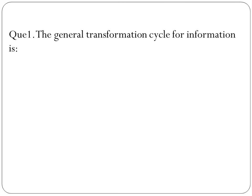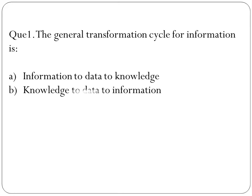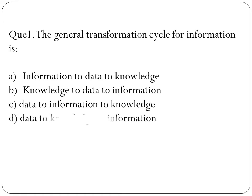First question is: the general transformation cycle for information system is what? The options are: information to data to knowledge, knowledge to data to information, data to information to knowledge, or data to knowledge to information. The right answer is data to information to knowledge.